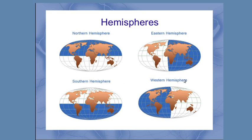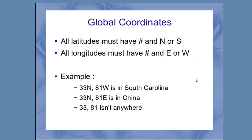Now when you have your actual coordinates of a location, latitudes have to have a number and north or south, longitudes must have a number and east or west.